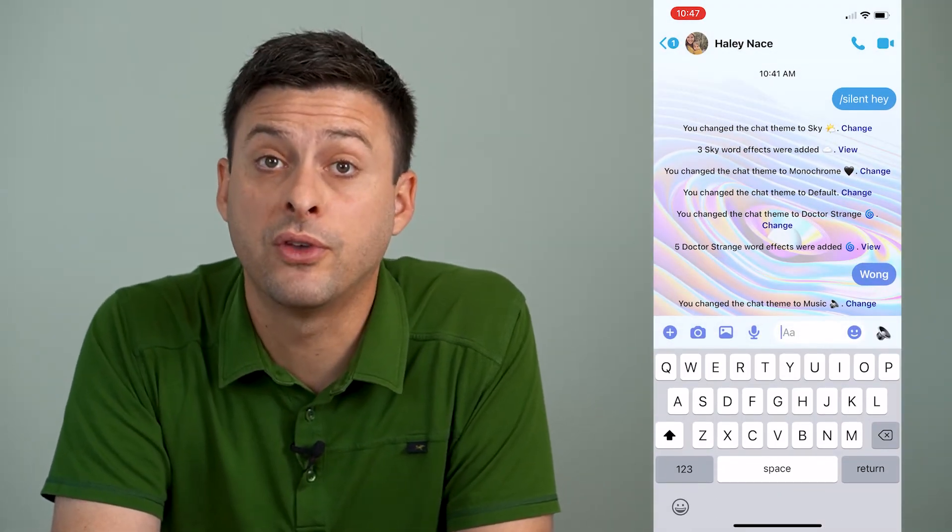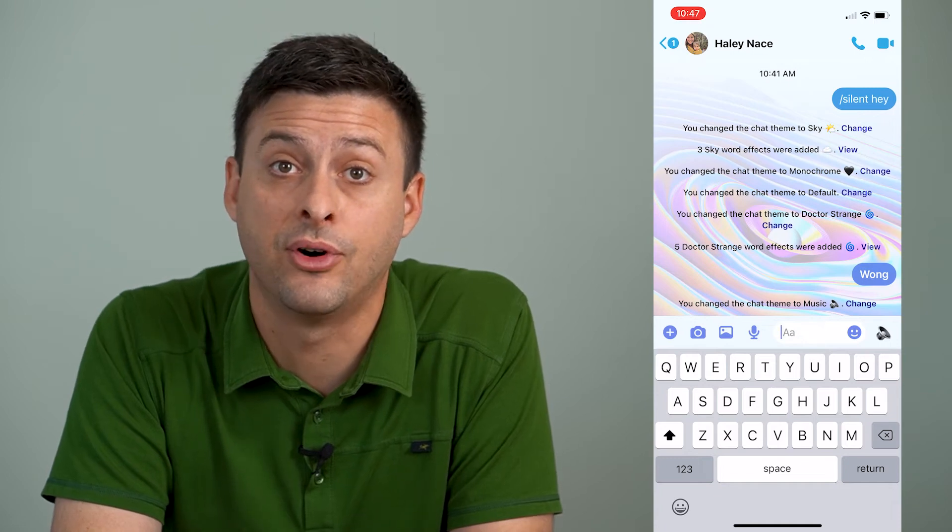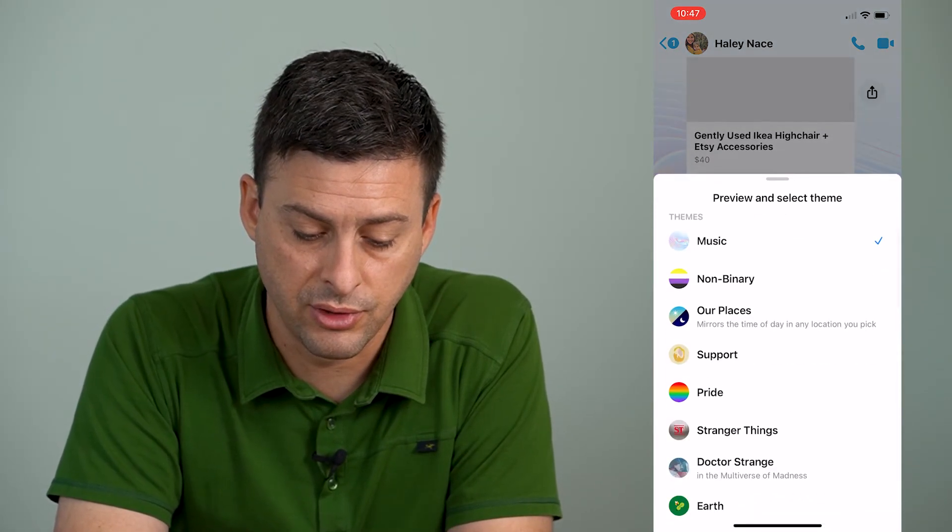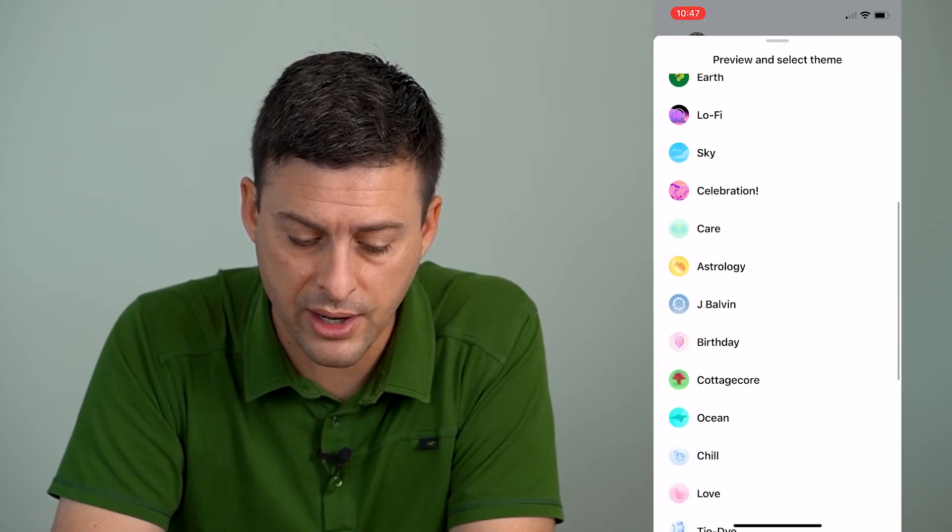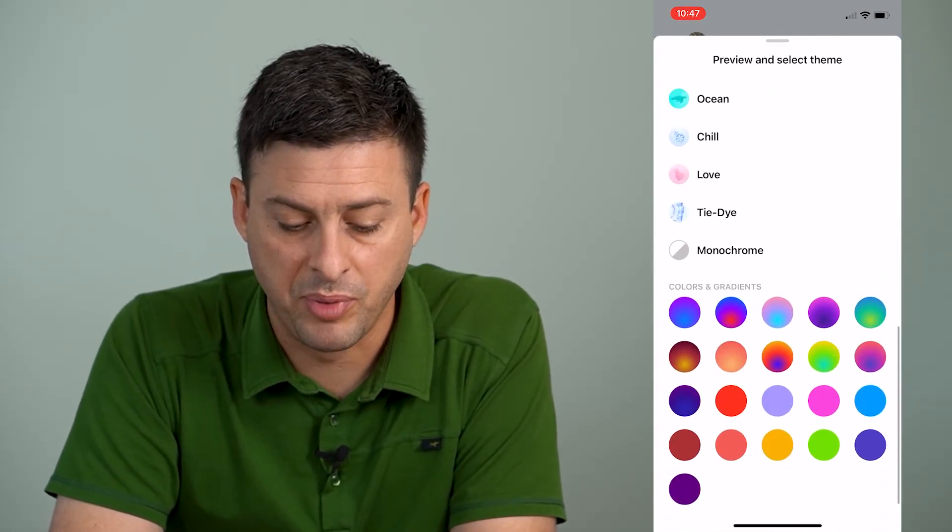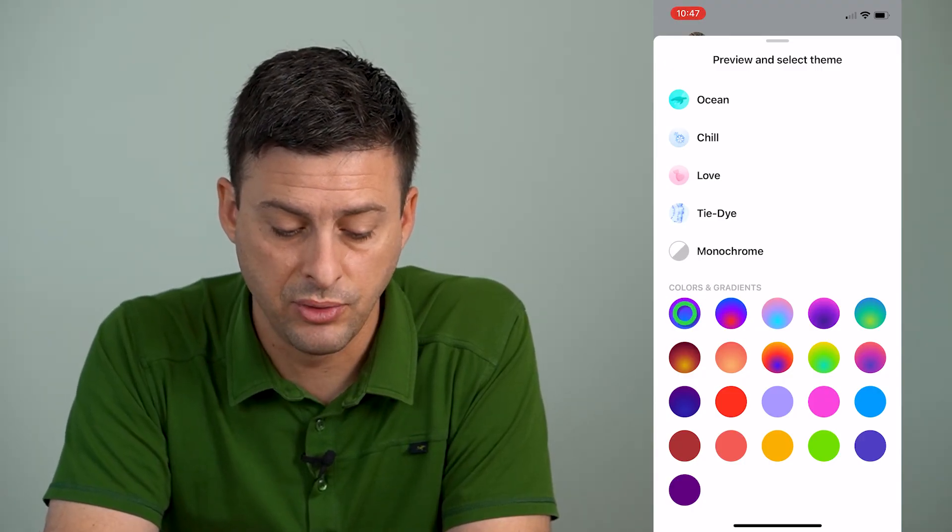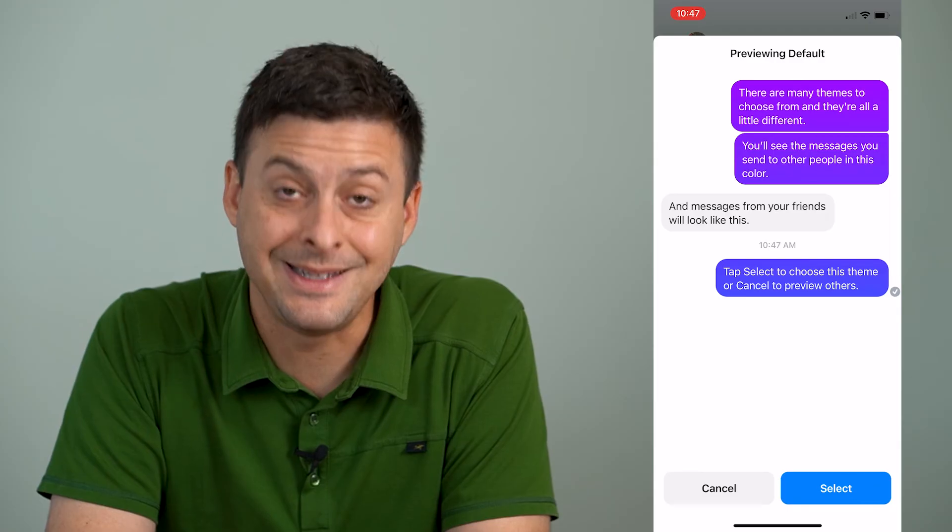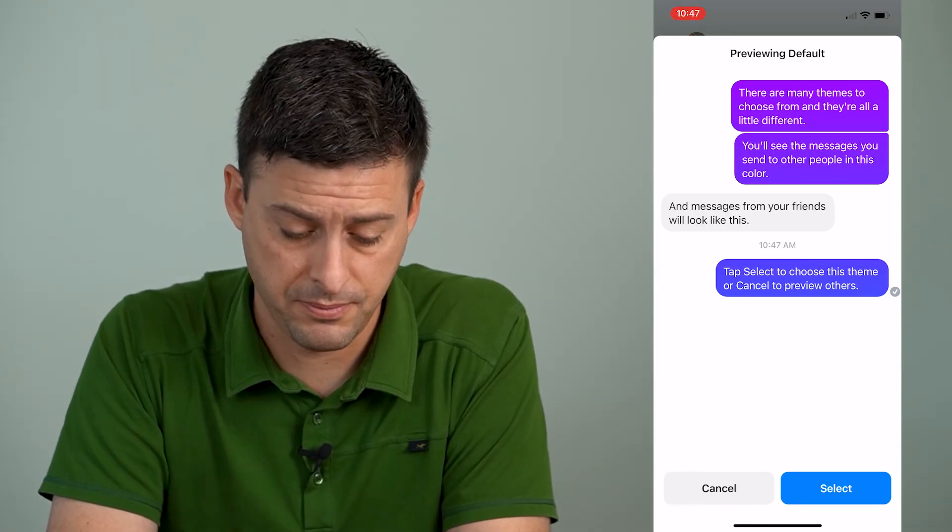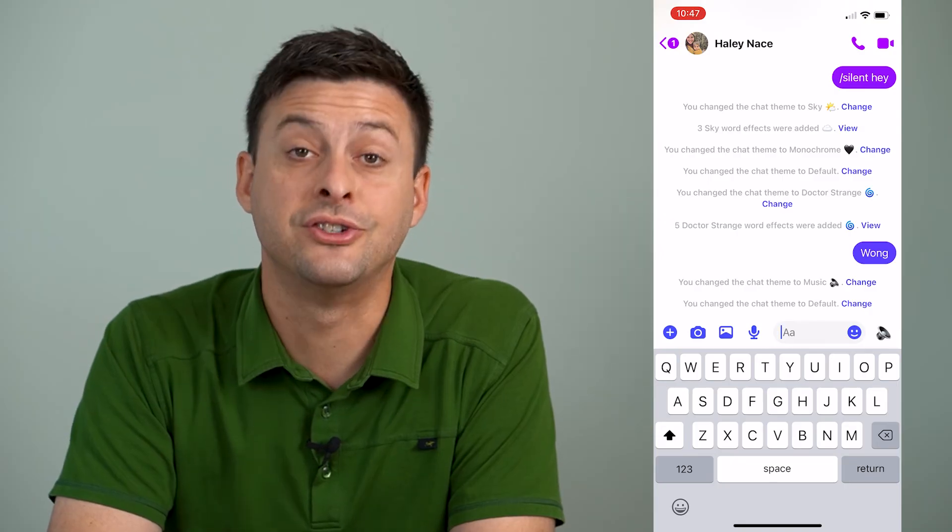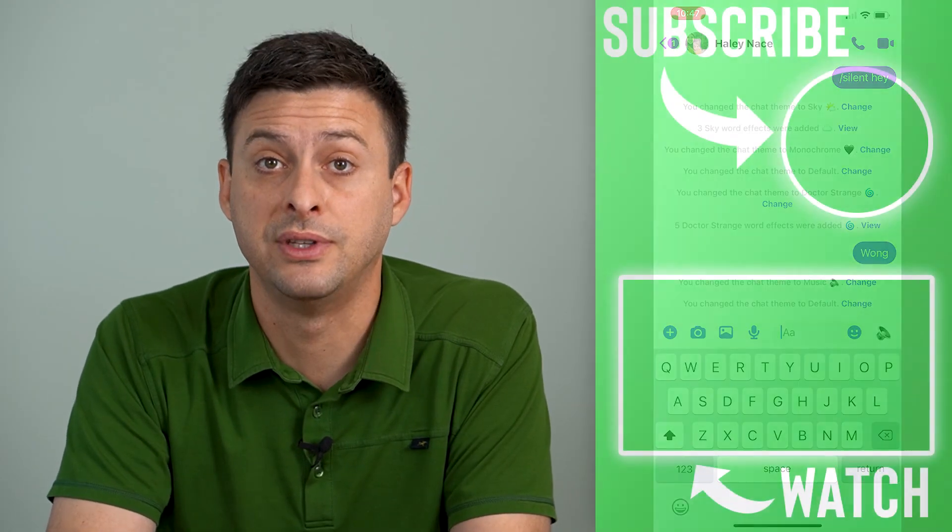If I ever want to go back to the original or default theme, I can again tap and hold on the screen. I'll scroll down, and you can see at the very bottom is just colors and gradients. And the first option, that blue and purple option, that is the default messenger theme. So I can hit select there, and you can see it changes it back to the original default theme.